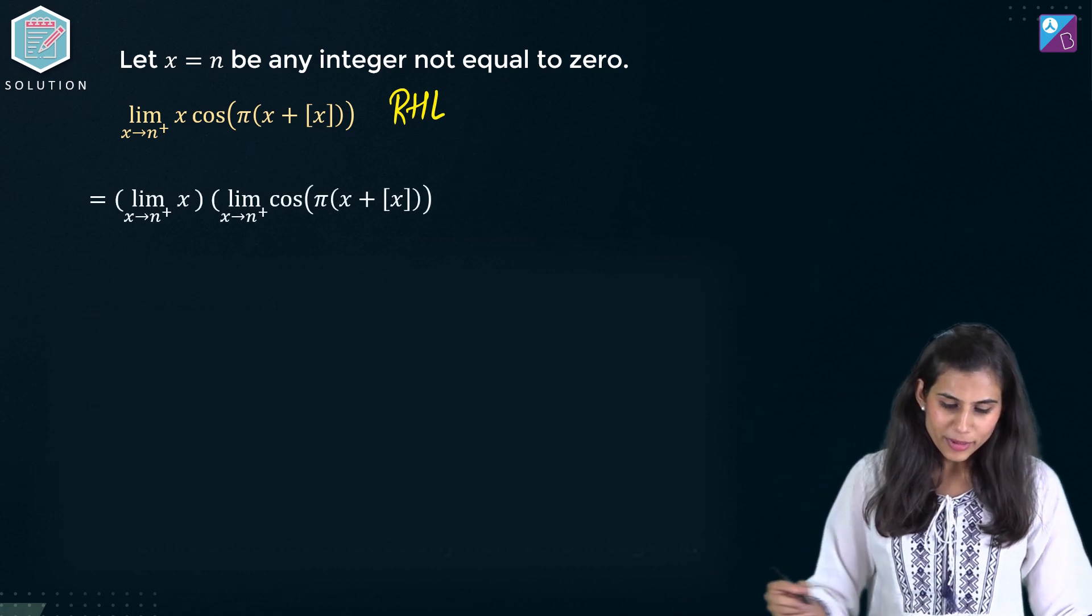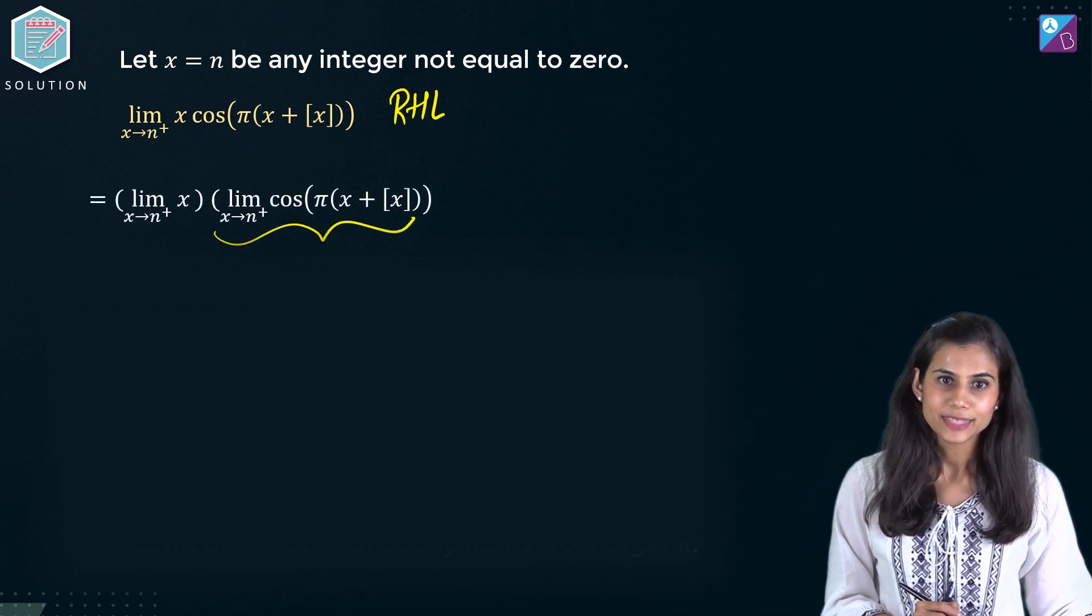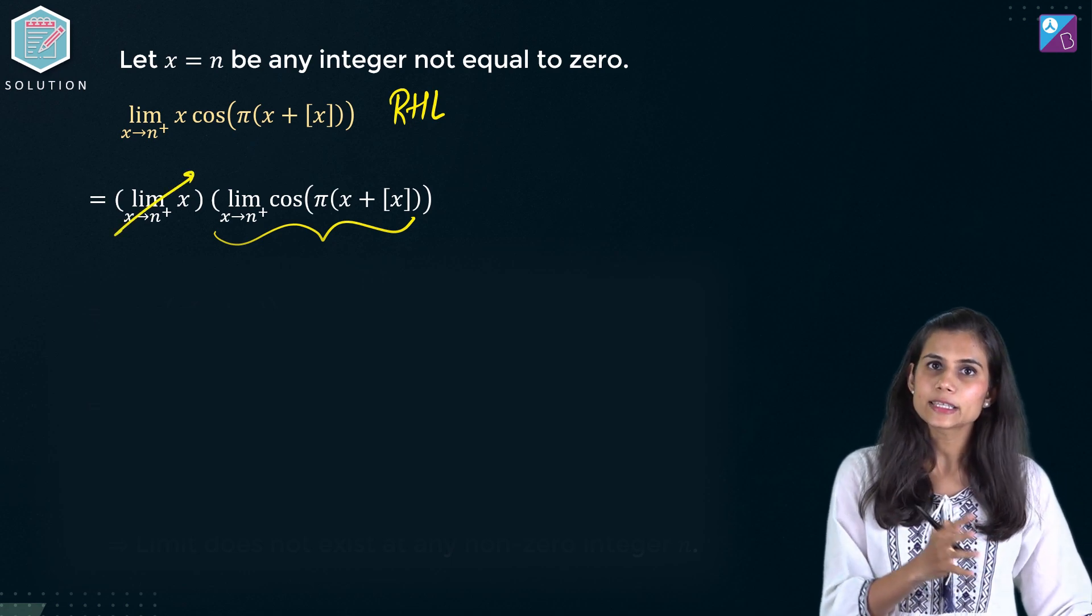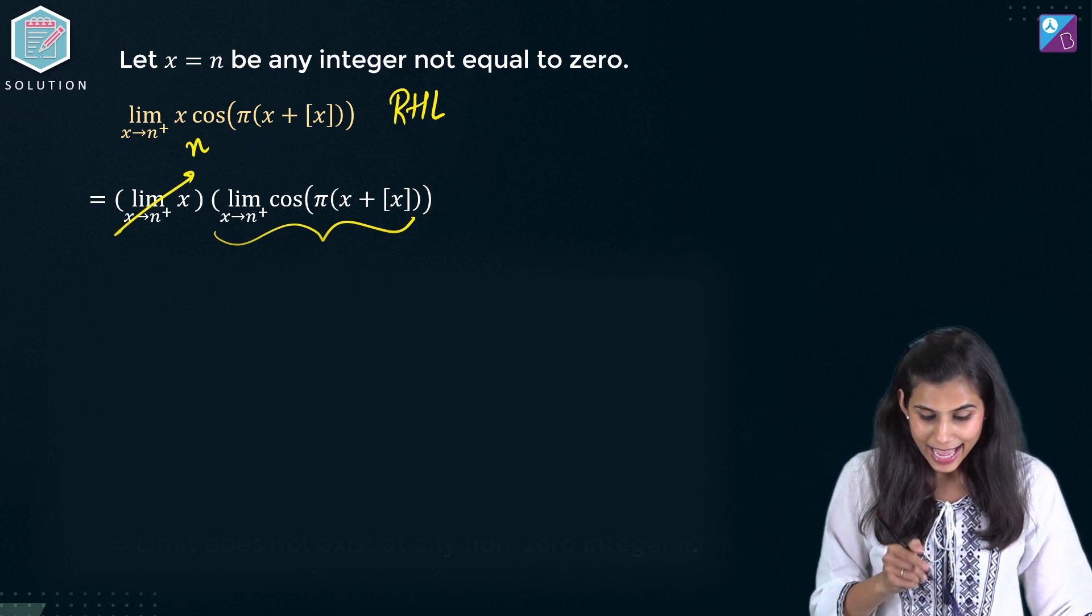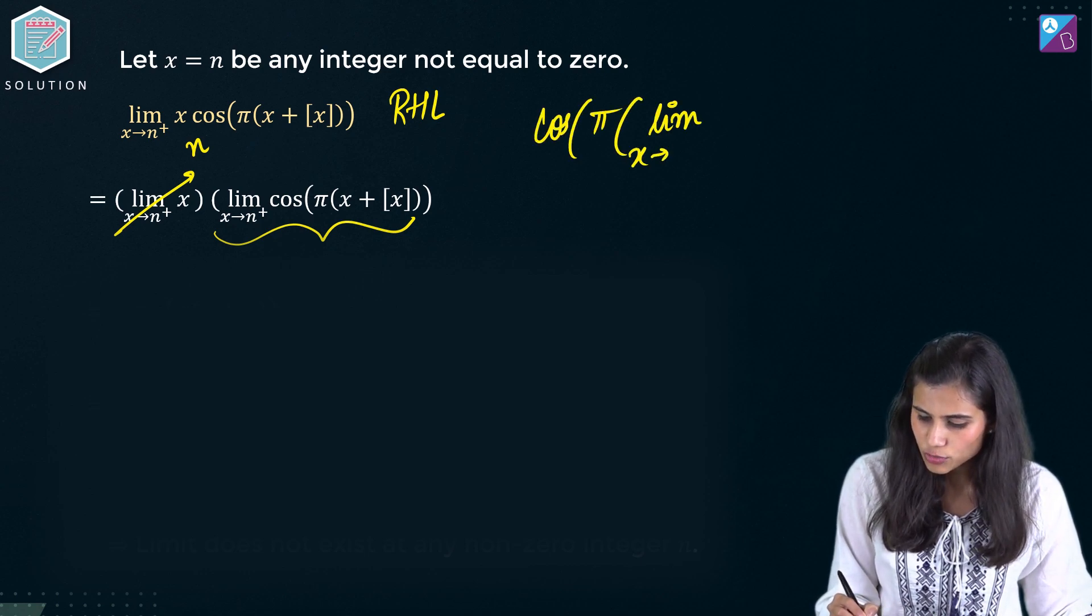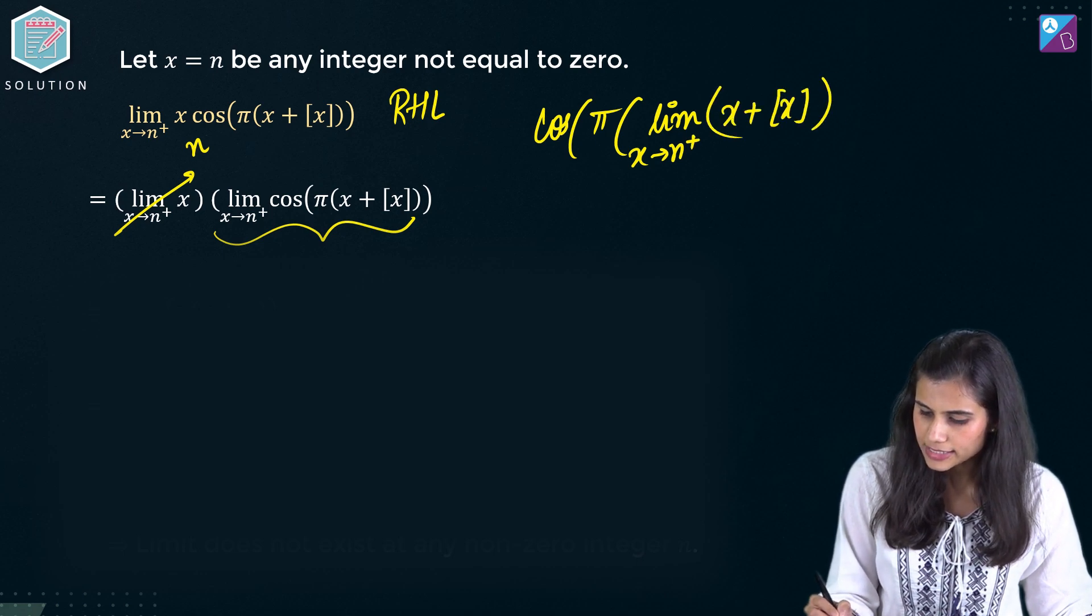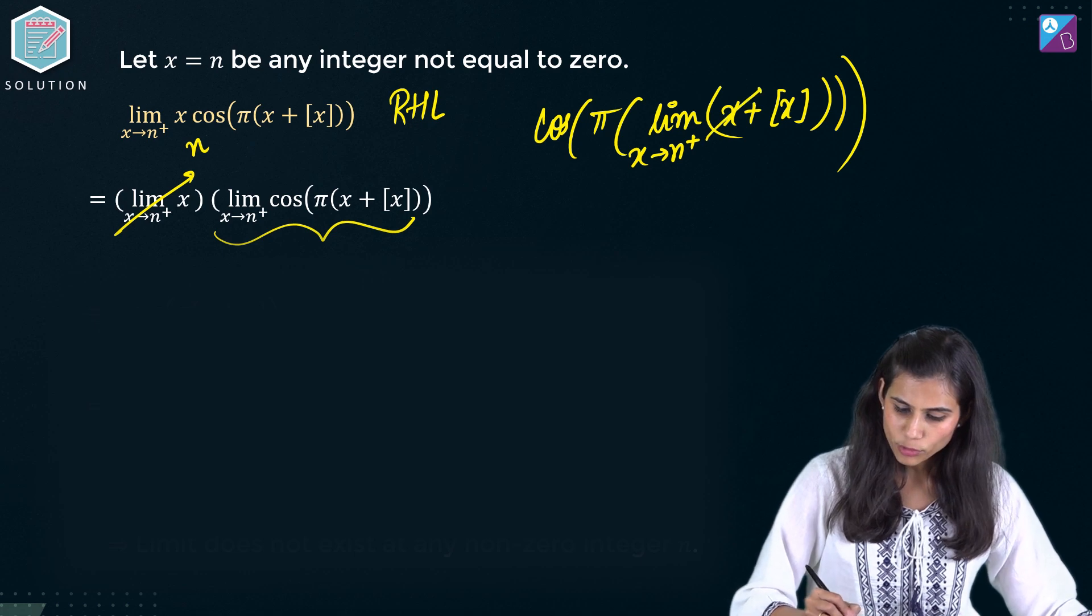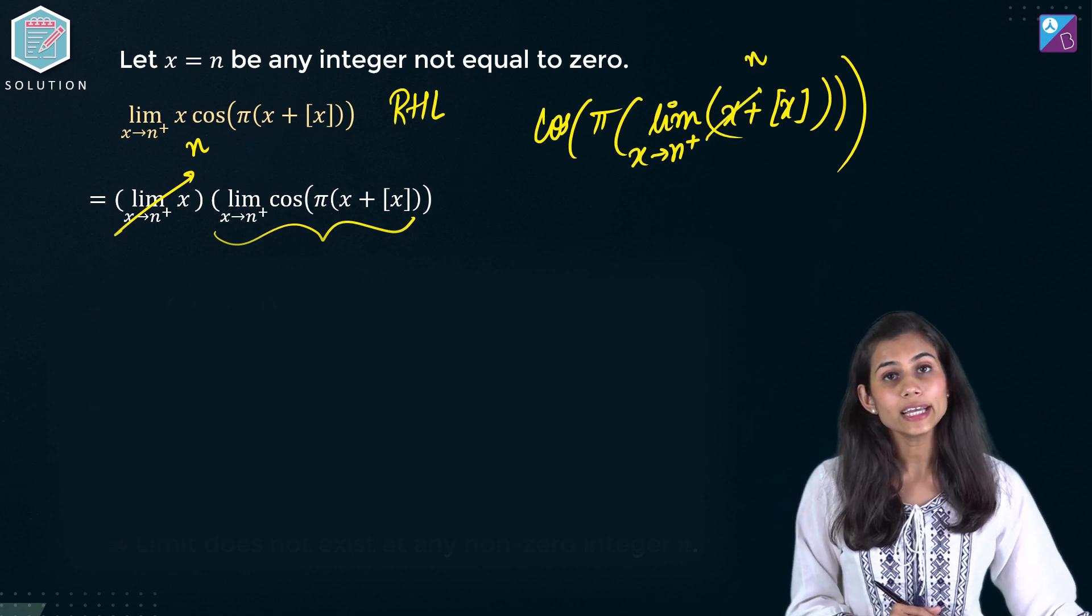Well, the moment you reach here, you know limit of x as x approaches n is again n. And here again what will happen? Cos of pi of limit x tends to n from the positive x plus gif of x. Now x approaches to n only. What about gif of x?